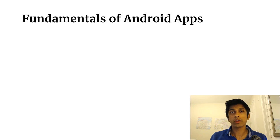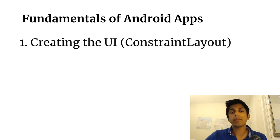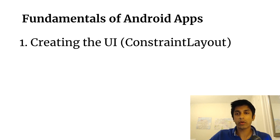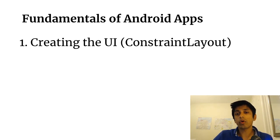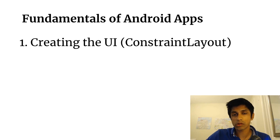The concepts we learn while building the tip calculator are going to be the same concepts that are fundamental to every Android app. First, creating the UI — every app needs a user interface. The way we'll do this for the tip calculator is using something called the constraint layout, which is a relatively recent addition to the Android ecosystem. Constraint layout allows us to create complex yet performant view hierarchies. It's going to be the view group that we use, and it contains all the other views such as a text view, edit text, and seek bar.